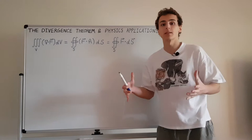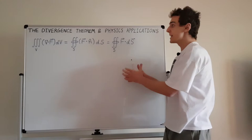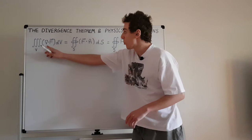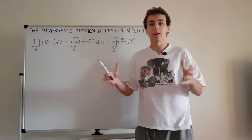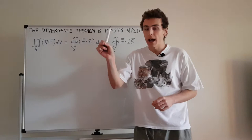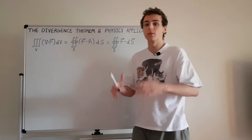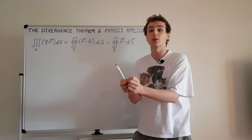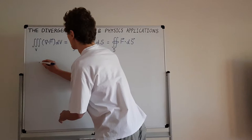The divergence theorem states that this volume integral of the divergence is equivalent to a surface integral of the vector field. In other words, the net flux through a closed surface equals the volume integral of all the divergence. Divergence describes how things come out of or go into a point: if divergence is zero, no net flow; if positive, things are coming out; if negative, things are going in.